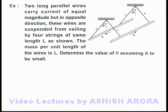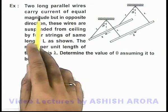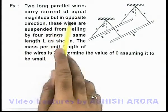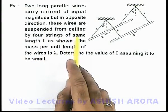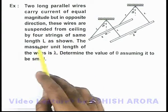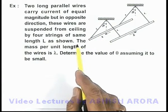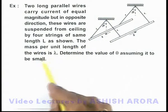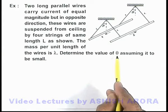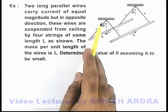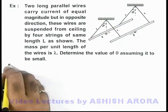In this example we are given that two long parallel wires carry current of equal magnitude but in opposite directions. These wires are suspended from the ceiling by four strings of same length L. The mass per unit length of the wire is lambda, and we are required to determine the value of theta, that is the angle by which the strings are diverging, assuming it to be very small.